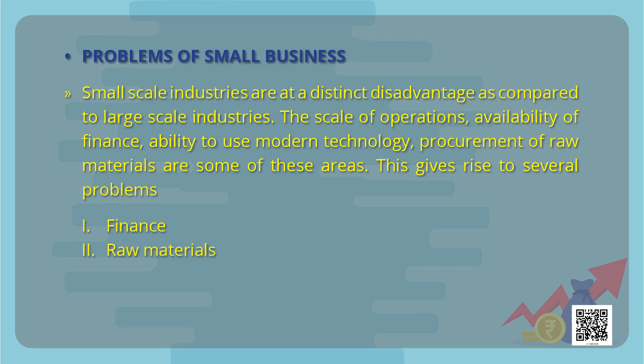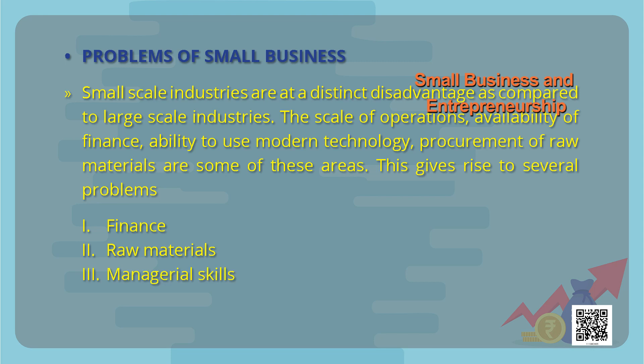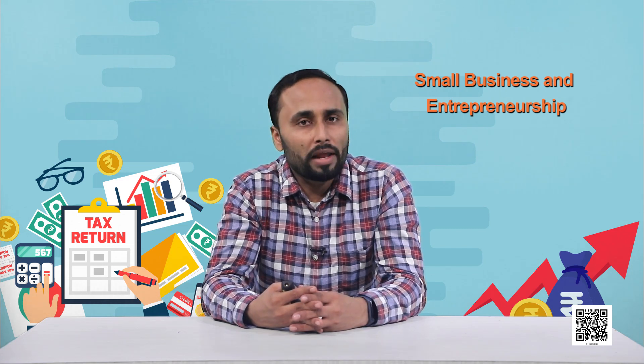Secondly, raw materials are also a tough task for these industries. Being small industries, they have lesser bargaining power and cannot bargain strongly with suppliers of raw materials, due to which they sometimes face the problem of arranging good quantity and quality of raw materials. Third, a very important and common problem is the lack of managerial skills. Since these industries are set up by local people who may not have formal knowledge or training in managing a business, this creates a hindrance in the growth of such industries and prevents them from making innovations.